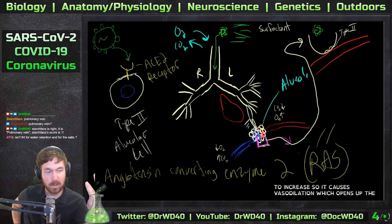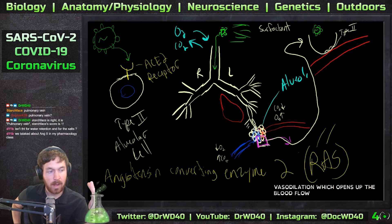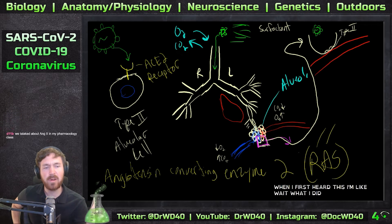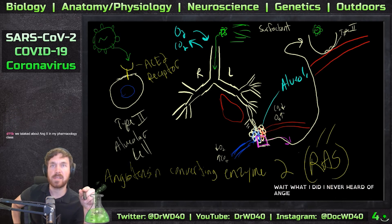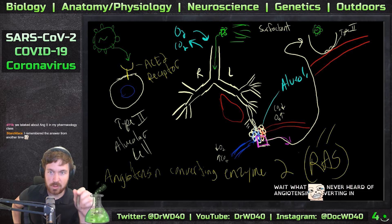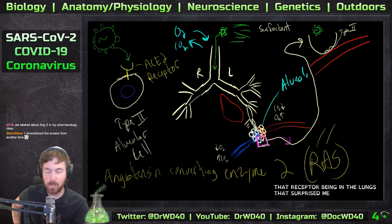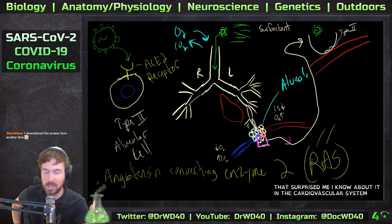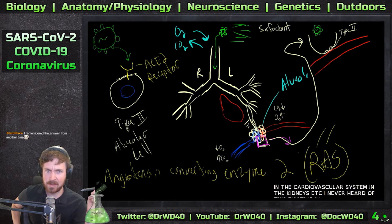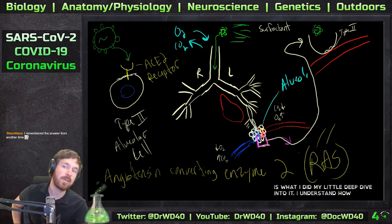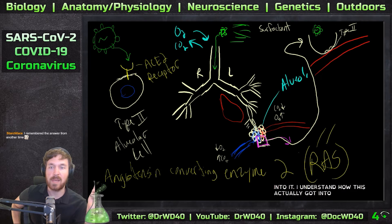When I first heard this I thought - wait, what? I never heard of angiotensin-converting enzyme 2, that receptor, being in the lungs. That surprised me - I know about it in the cardiovascular system and kidneys, but I never heard of this existing in the lungs.